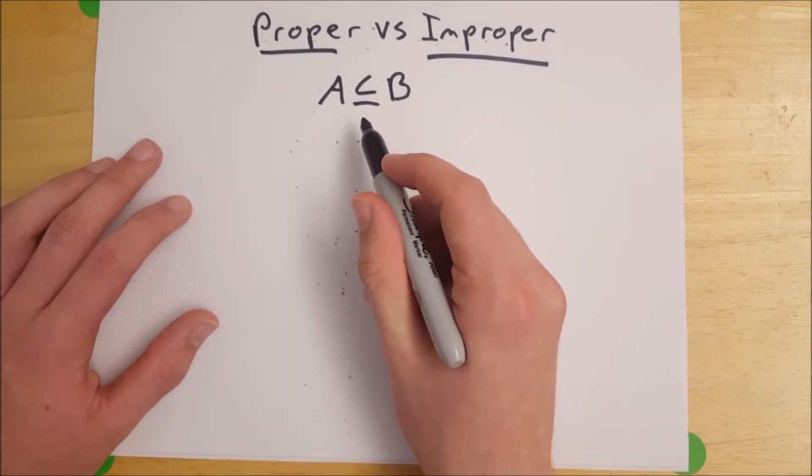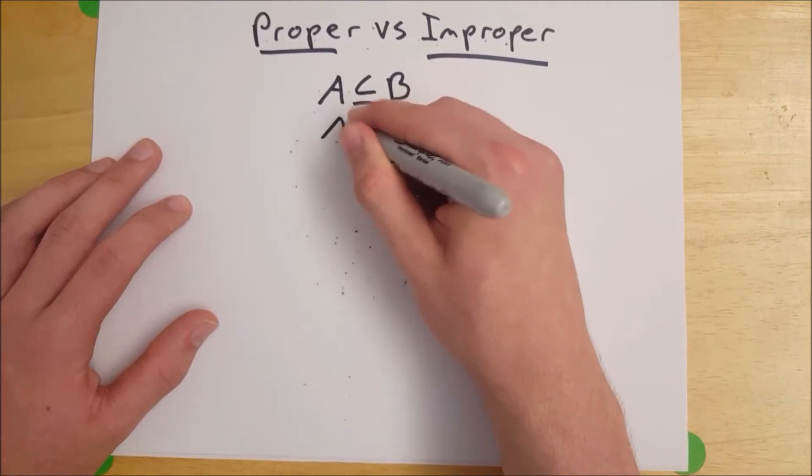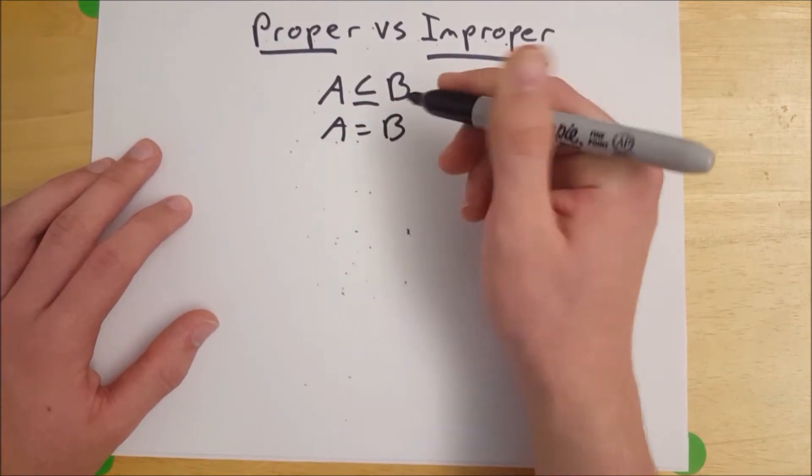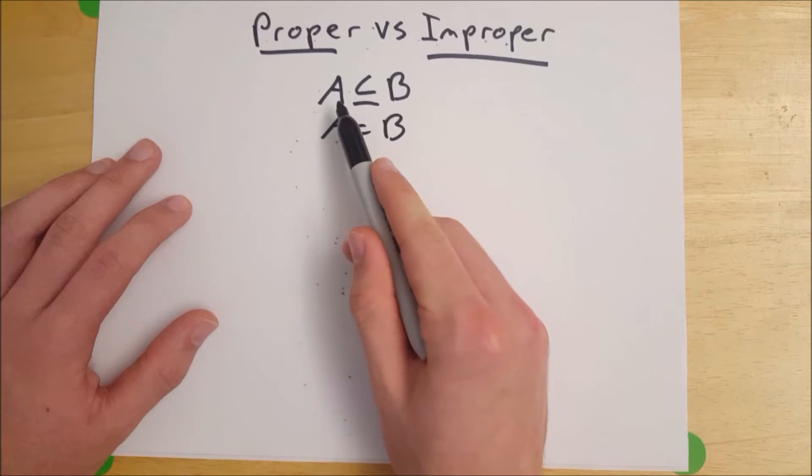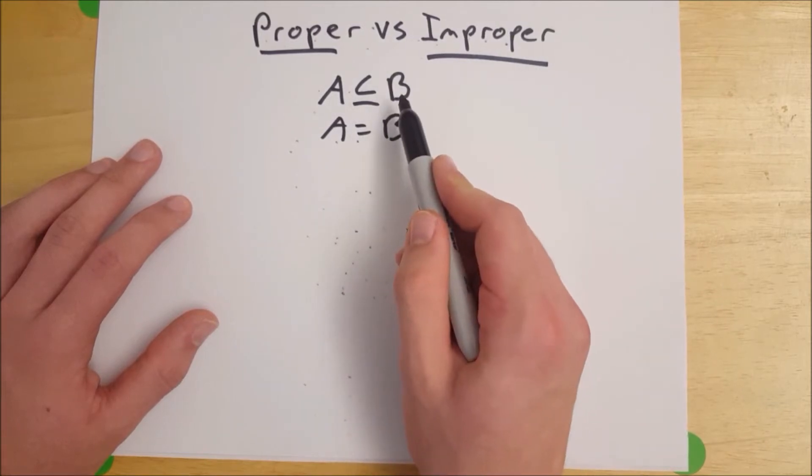However, when we use this symbol, this means that A may also be equal to B. If that were the case, then we would say that A is an improper subset of B.